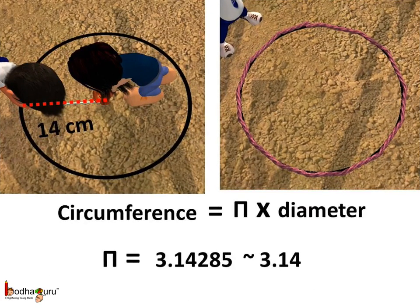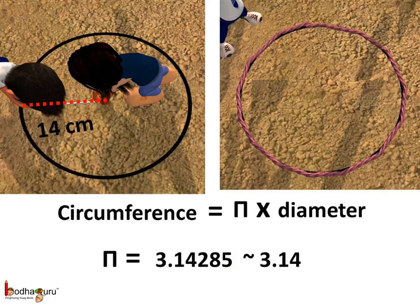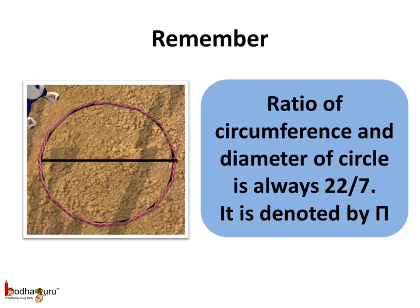If you calculate the value of pi, that is 22 by 7, we get almost 3.14285. It's a non-terminating, non-recurring decimal number. In short, we can write it as 3.14. Remember children, the ratio of circumference and the diameter of the circle is always a constant, pi, whose value is 22 by 7, and this ratio is the same for all circles.